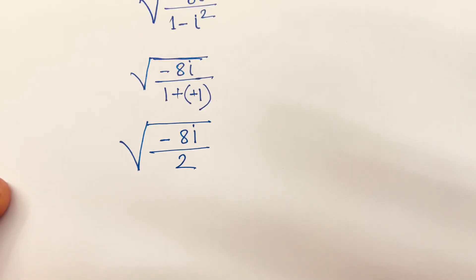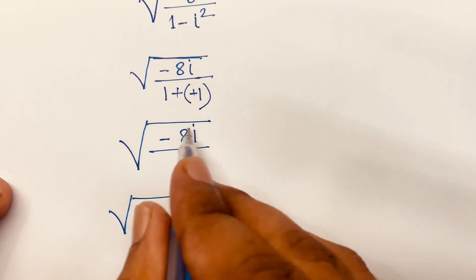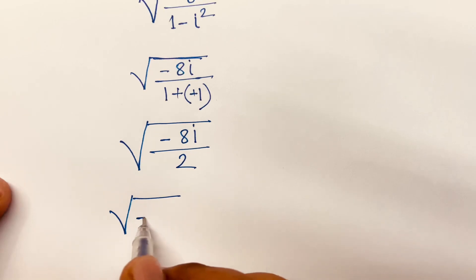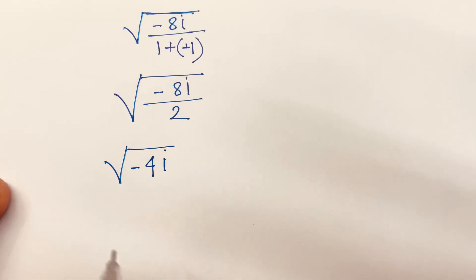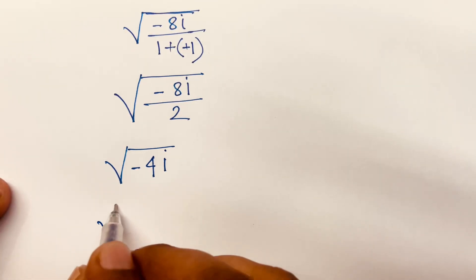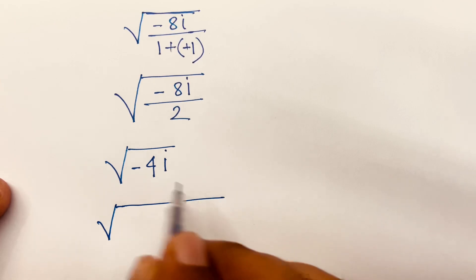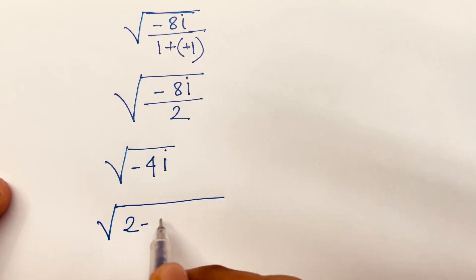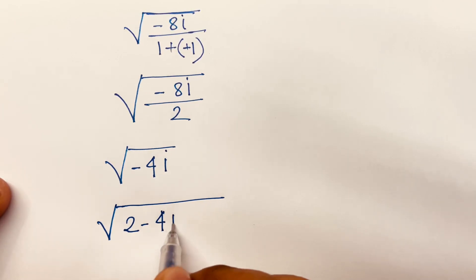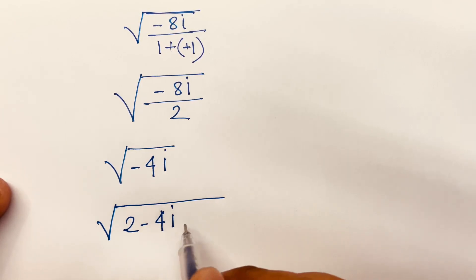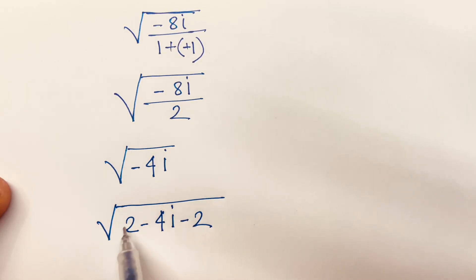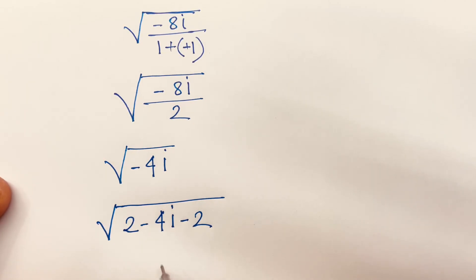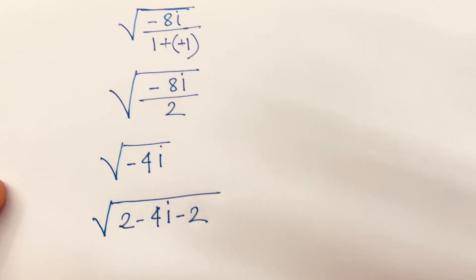Then, square root of this divided by this gives us minus 4i. Then I can say here is square root of 2 minus 4i minus 2. Because of that, 2 minus 2 is equal to 0. Then we find the previous line again.